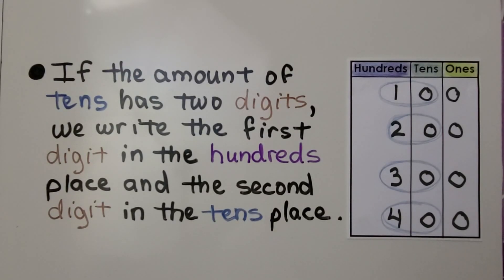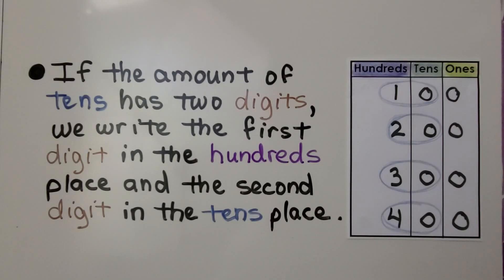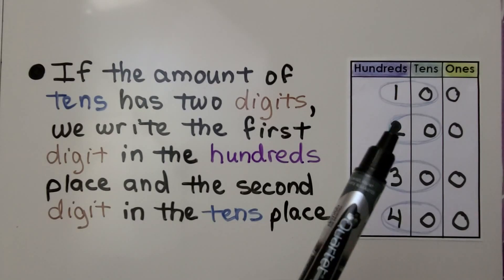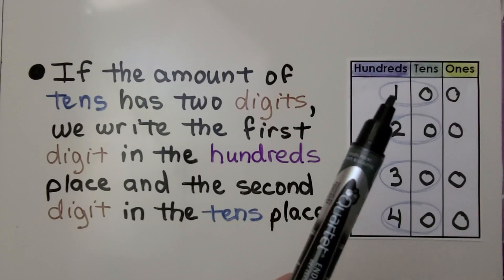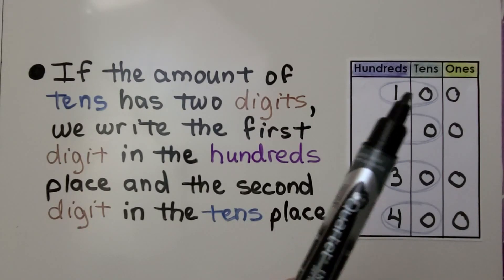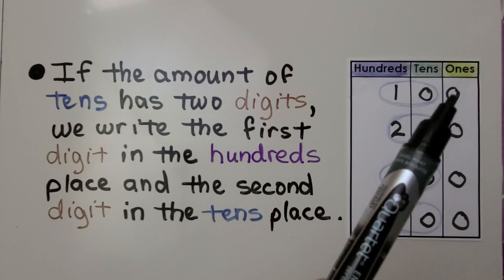If the amount of tens has two digits, we write the first digit in the hundreds place and the second digit in the tens place. If we have ten tens, we write it as 100, zero tens, and zero ones.